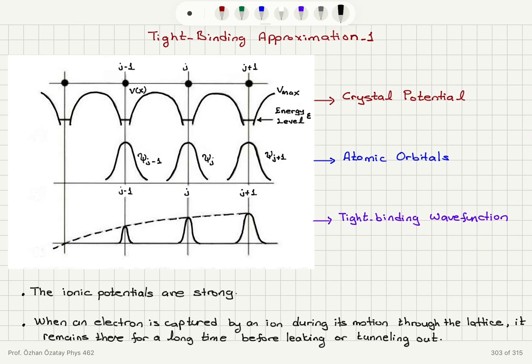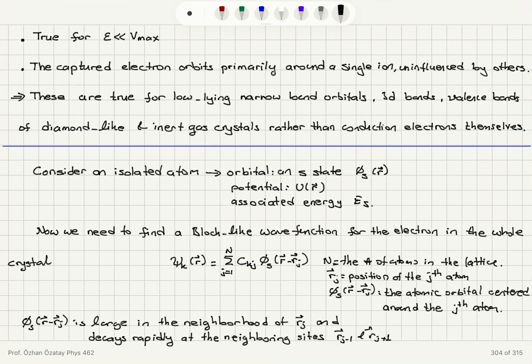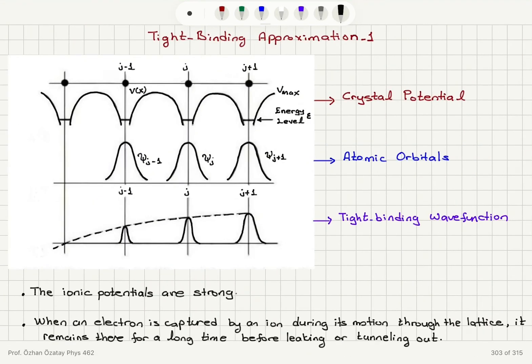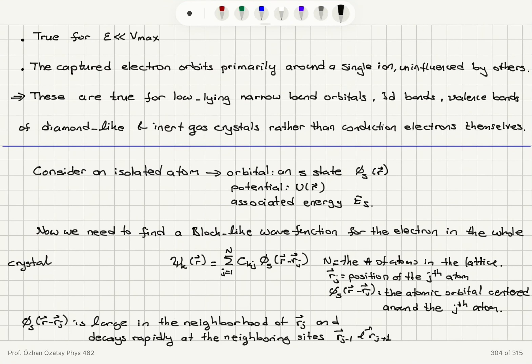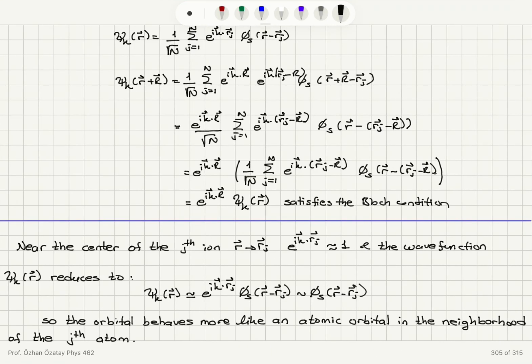and the electrons have a low probability of tunneling out so they're basically captured by these ions and I have found a proper form for this wave function 1 over square root N sum j equals one to capital N e to the i k dot rj phi s of r minus rj